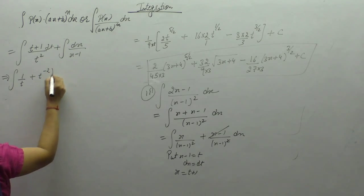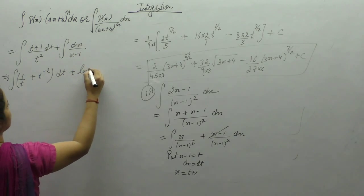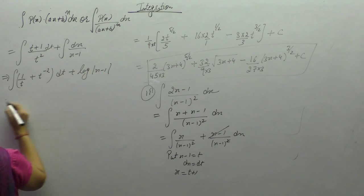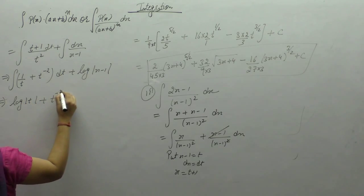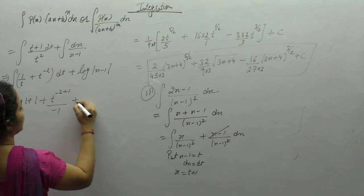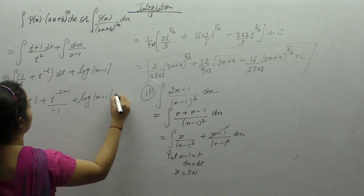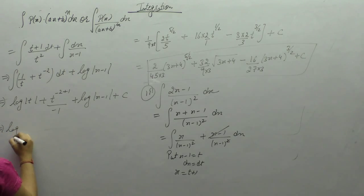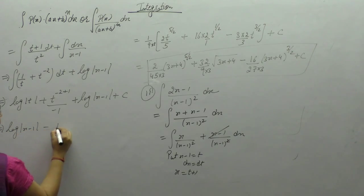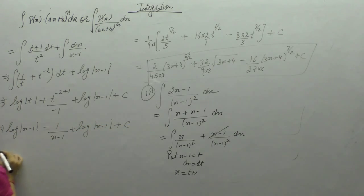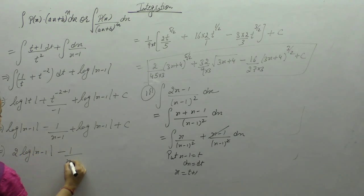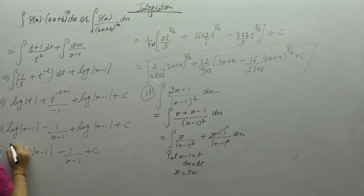We get 1 upon t plus t power minus 2, and 1 upon (x minus 1) becomes log of (x minus 1). The integral of 1 upon t is log of t, and t power minus 2 integrates to minus 1. The result is log of (x minus 1) minus 1 upon (x minus 1) plus log of (x minus 1), giving 2 log of (x minus 1) minus 1 upon (x minus 1) plus c.